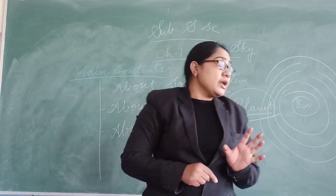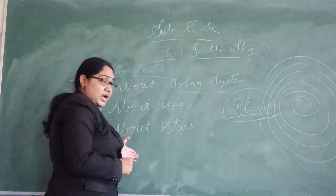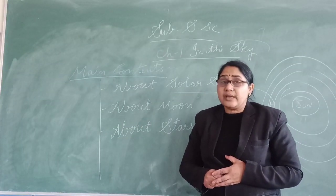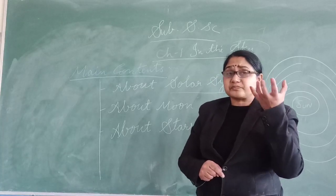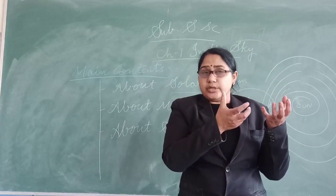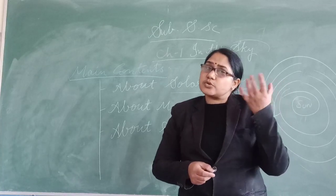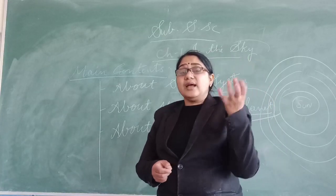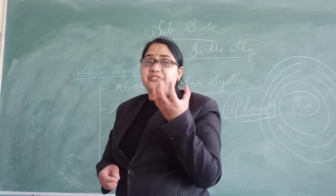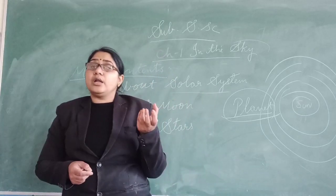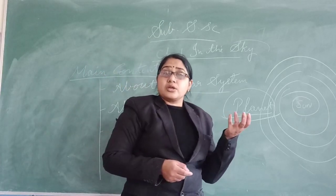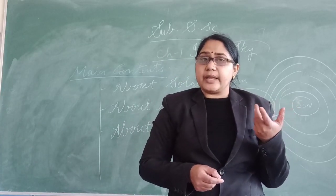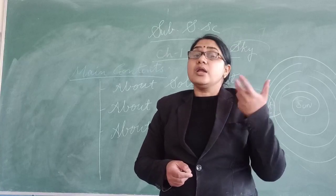Now about the stars: the sun is also a star. Stars are big objects made up of hot gases only, and the sun is also made up of hot gases. All the stars form different shapes, and these shapes are called constellations — for example, Scorpio and Orion.